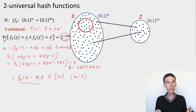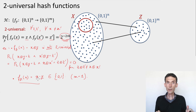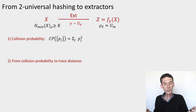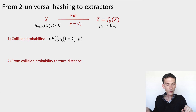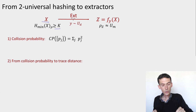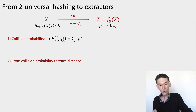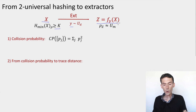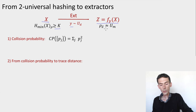Now we have a notion of two-universal hash functions. Let's connect it to strong seeded extractors by showing that if you have a family of two-universal hash functions, you can use this to construct a strong seeded extractor. Let's see the idea for the proof for the case where there is no side information — a purely classical setup. The source x is an n-bit string with min entropy at least k, and we apply an extractor that chooses a seed y uniformly at random and produces output z by applying a function chosen from a family of two-universal hash functions. Our goal is to show that the output is uniformly distributed.